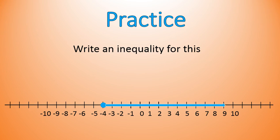Go ahead and write the inequality for this one. The answer is x is greater than or equal to negative 4. The greater than or equal to is because it's a filled-in circle at the point negative 4, and we are highlighting everything greater than negative 4 with the arrow going to the right. So this inequality is x is greater than or equal to negative 4.